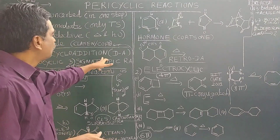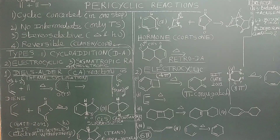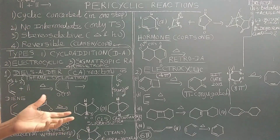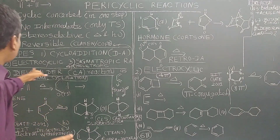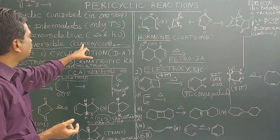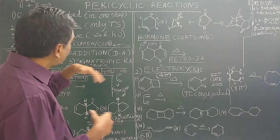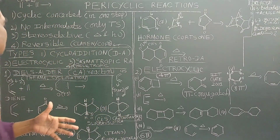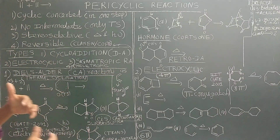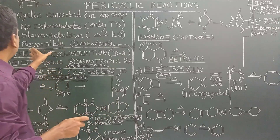The four types are: cycloaddition reactions — for example, the Diels-Alder reaction, which is studied in degree, BSc, and MSc courses — electrocyclic reactions, sigmatropic rearrangement reactions (for example, Claisen rearrangements are pericyclic reactions), and chelotropic reactions, which are also pericyclic reactions.